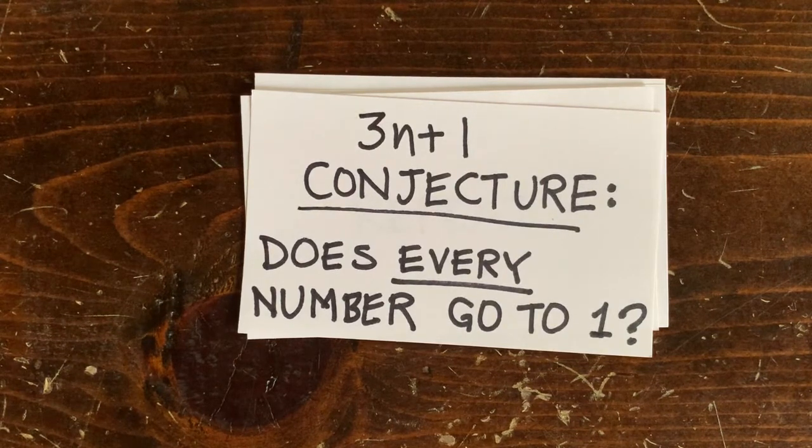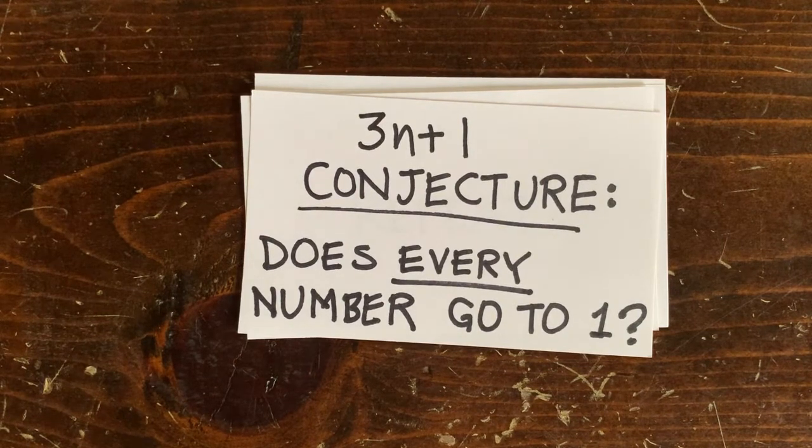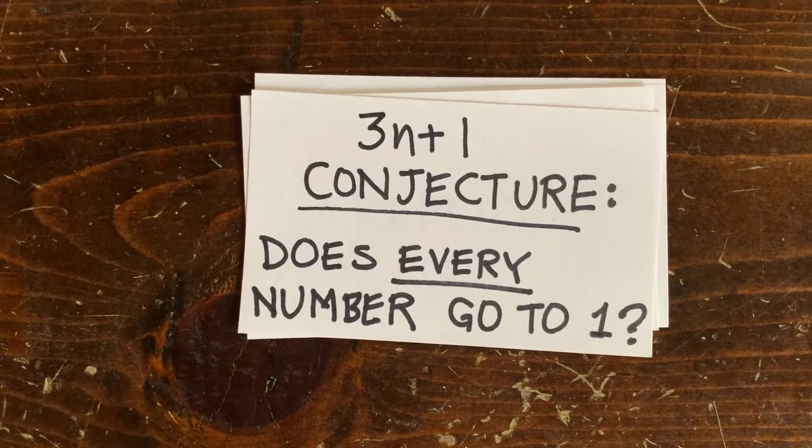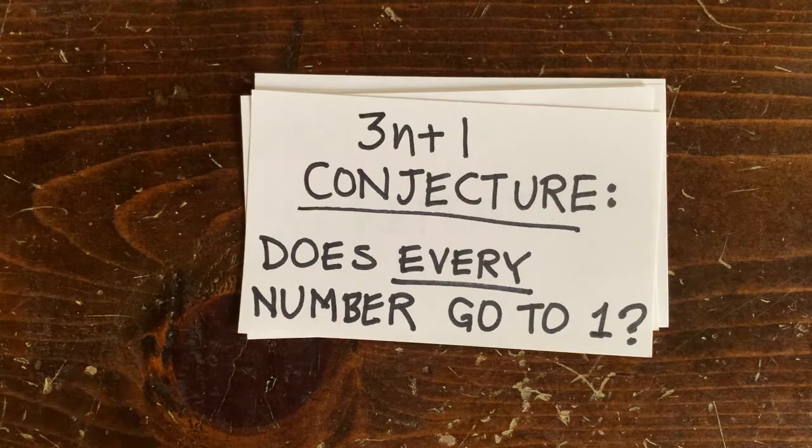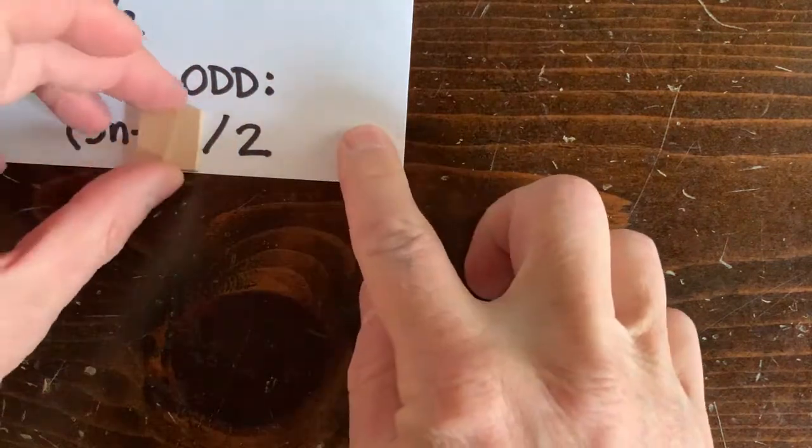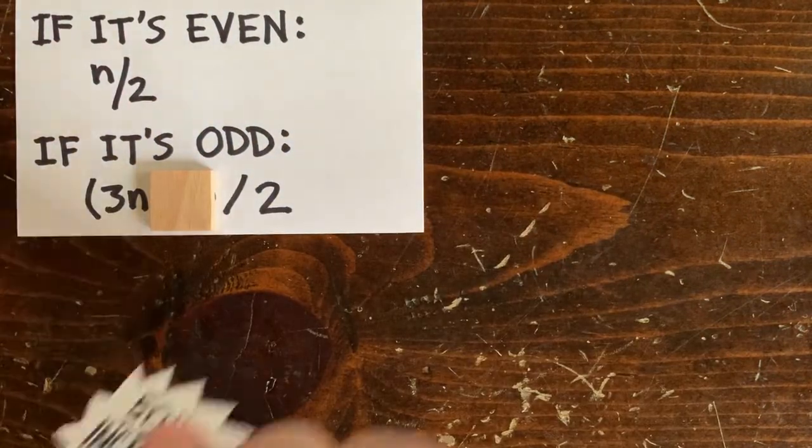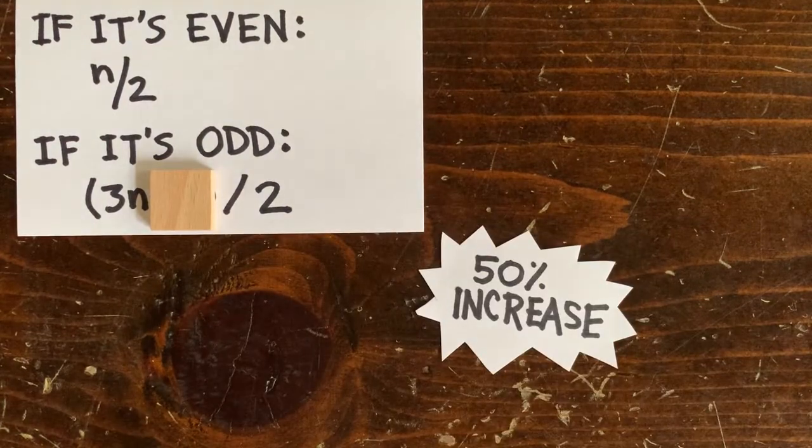So let's figure out why 3n plus 1 sequences tend to go down instead of going up or holding steady. If a number n is odd, then we do 3n plus 1 over 2. Let's forget about that little plus 1 for a second and notice that this basically increases the number by about three halves or 50%. If n is even, on the other hand, then we reduce it by 50%.